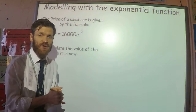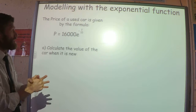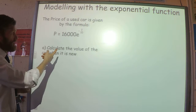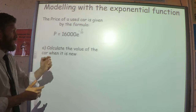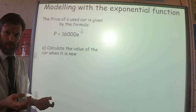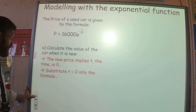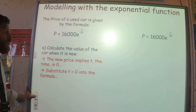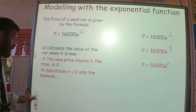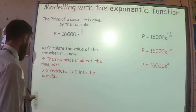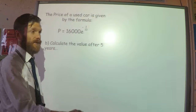Now let's do a bit of mathematical modelling. The price of a used car is given by the formula P equals 16,000 multiplied by e to the power of minus t over 10. To calculate the value when it is new, t equals 0. Substituting that in gives 16,000 times e to the power of 0. E to the power 0 is 1, so 16,000 times 1 is 16,000. The price of the car when brand new is £16,000.